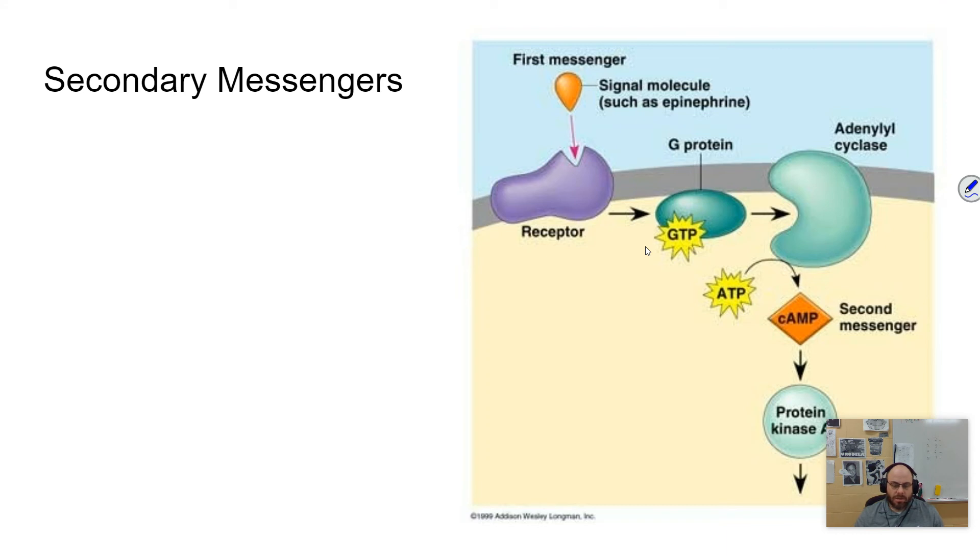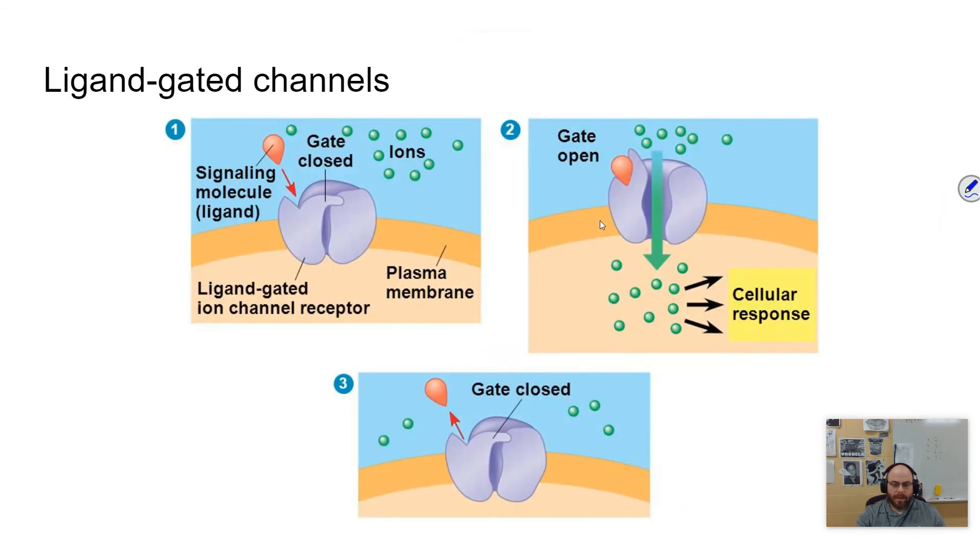Secondary messengers are also used in this process and a secondary messenger is just a relay signal. They're used to relay, to amplify that. Cyclic AMP is a common secondary messenger that is used by cells.